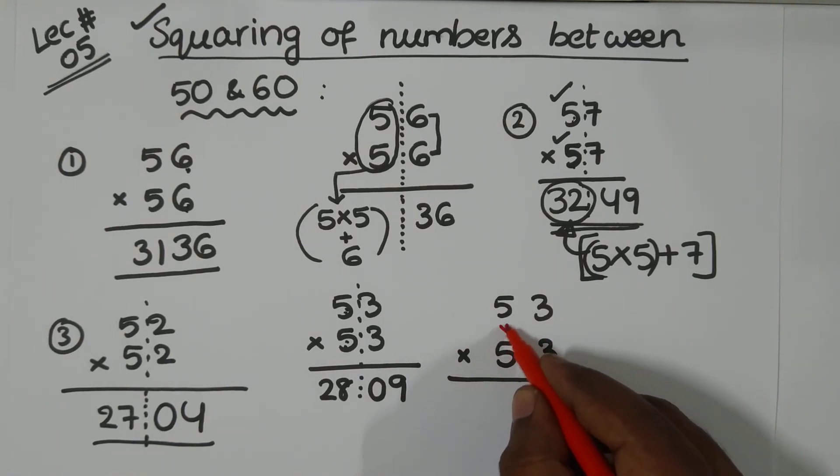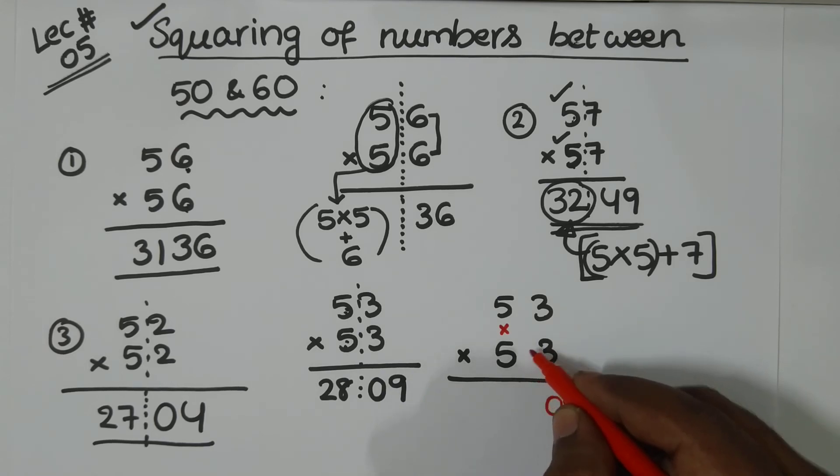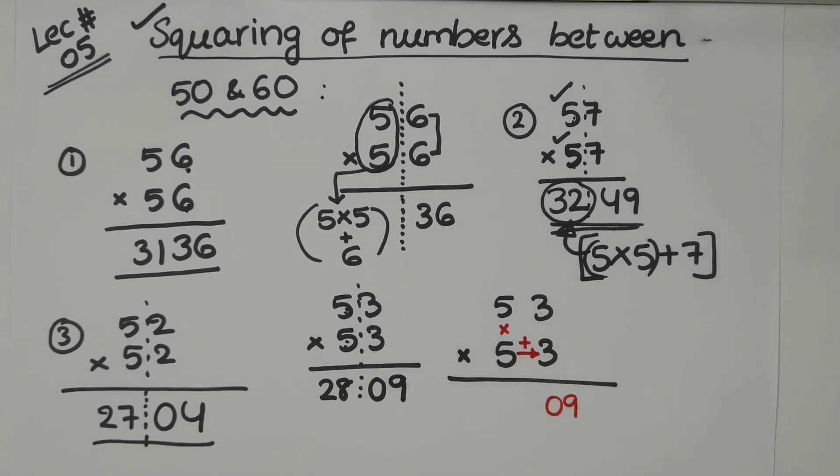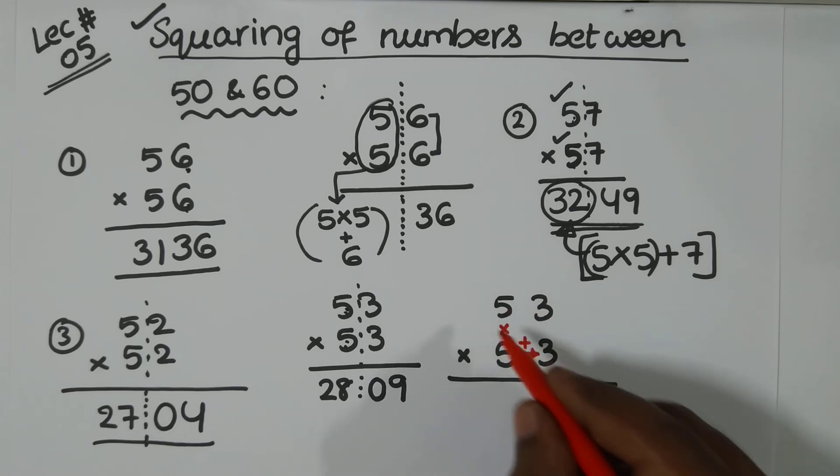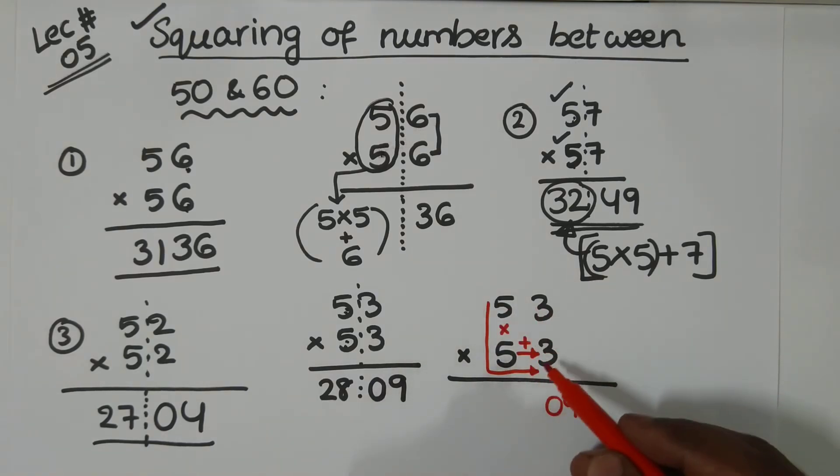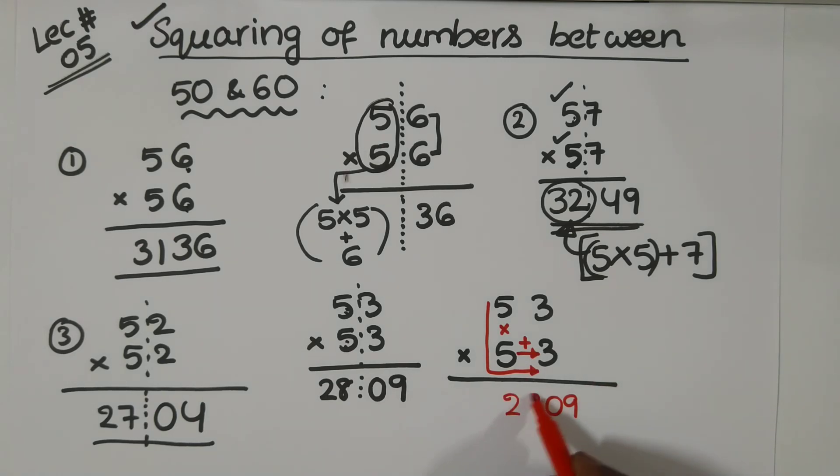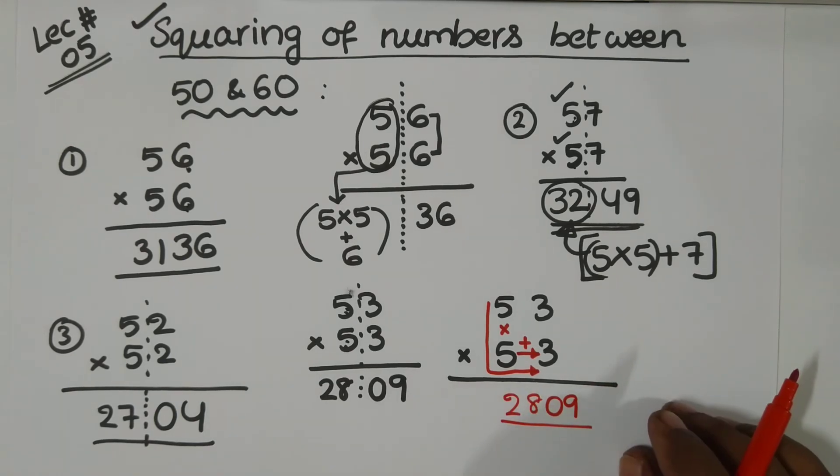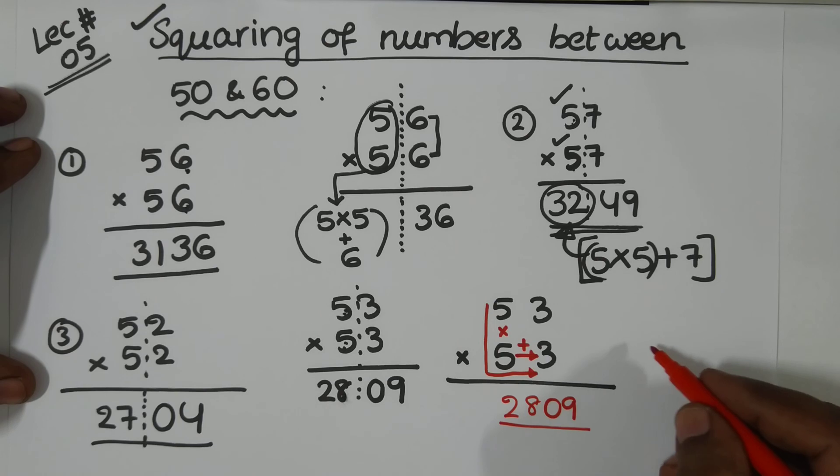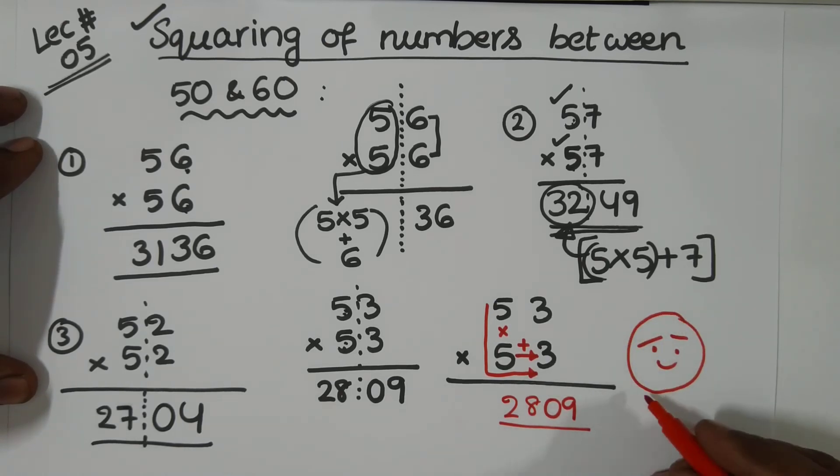Now, see 5 multiplied by 5 plus 3. Okay? So, 5, 5 is 25 plus 3, 28. That's it. Okay? That's it for today. It's very simple. Lecture 5 is short and simple.